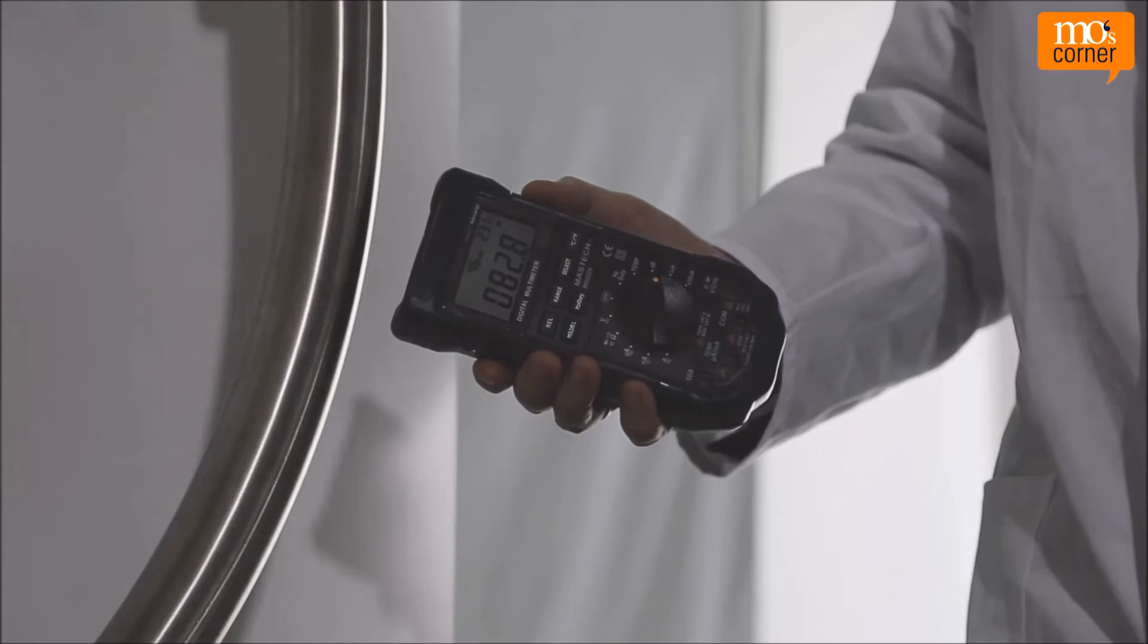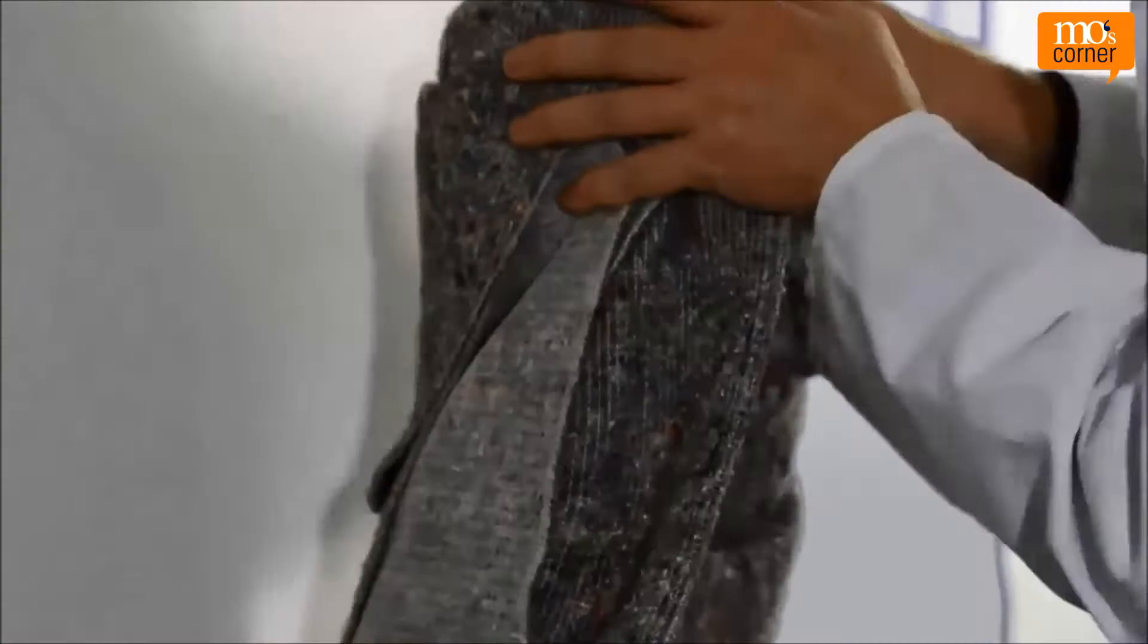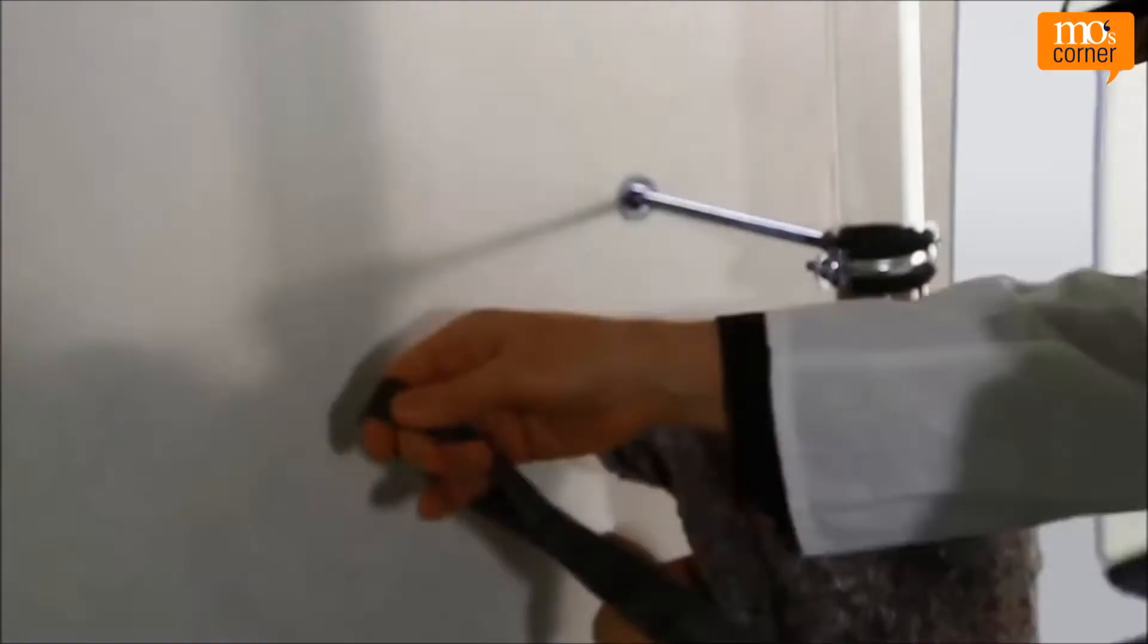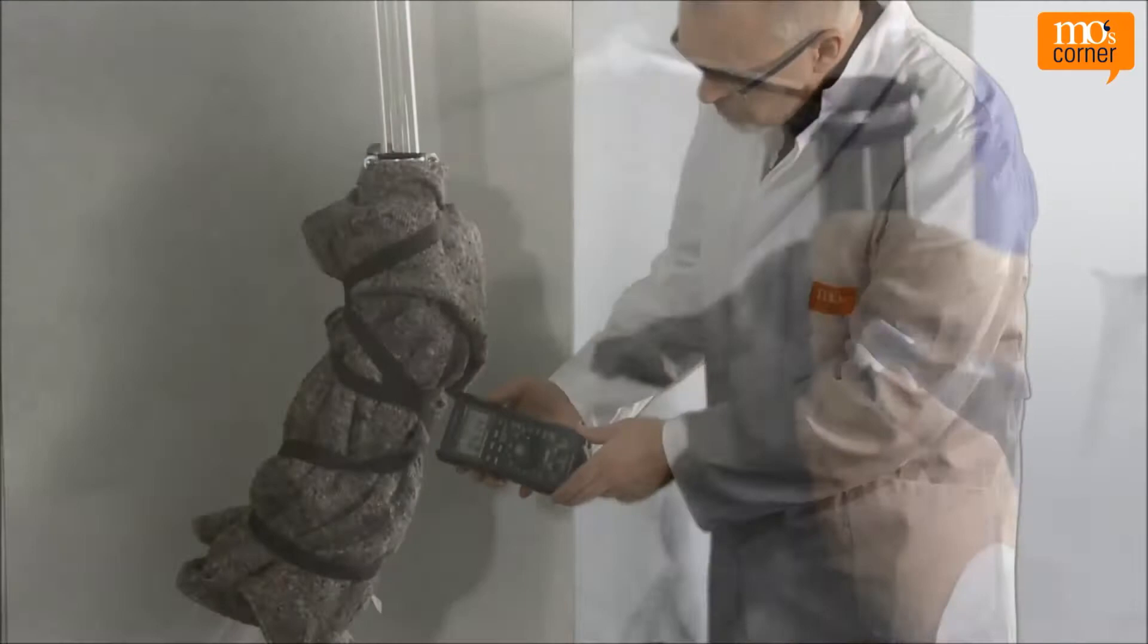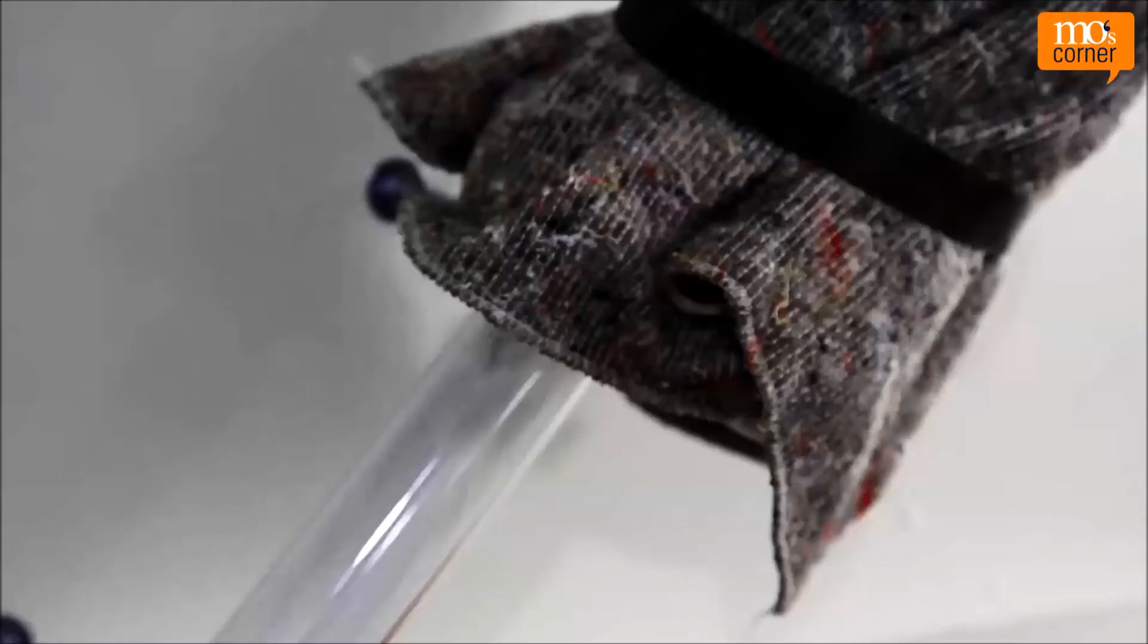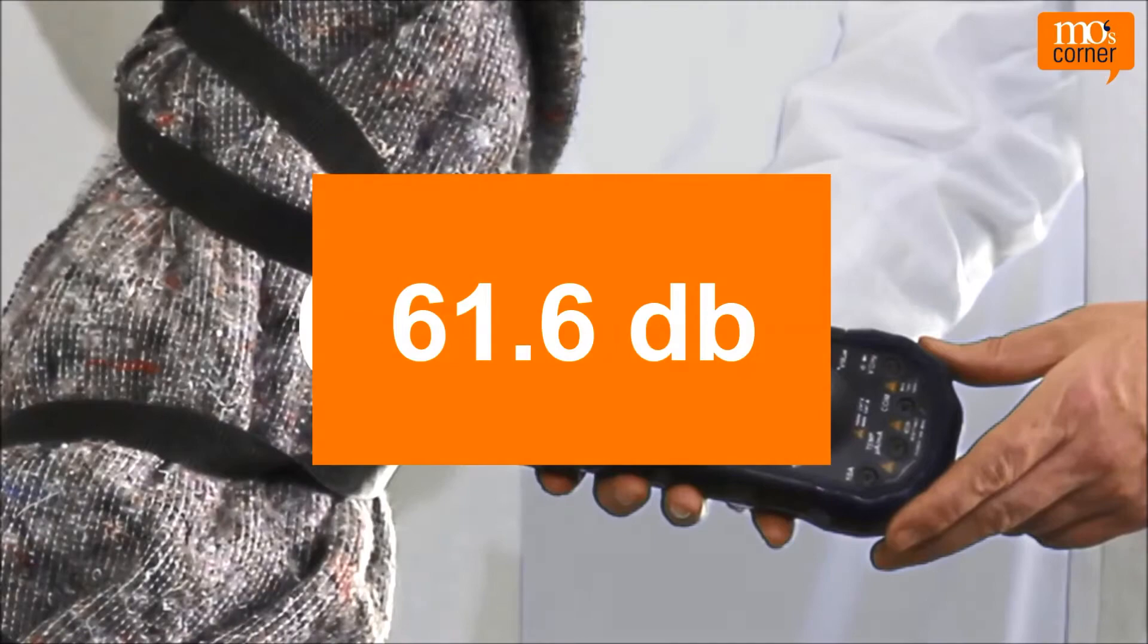Now we want to insulate like mad. A conventional blanket is wrapped around the pipe in 12 layers. This isn't easy and doesn't look pretty, but we want to know how much is possible. 61.6 decibels. 12 layers of blanket insulates well, as you can see.